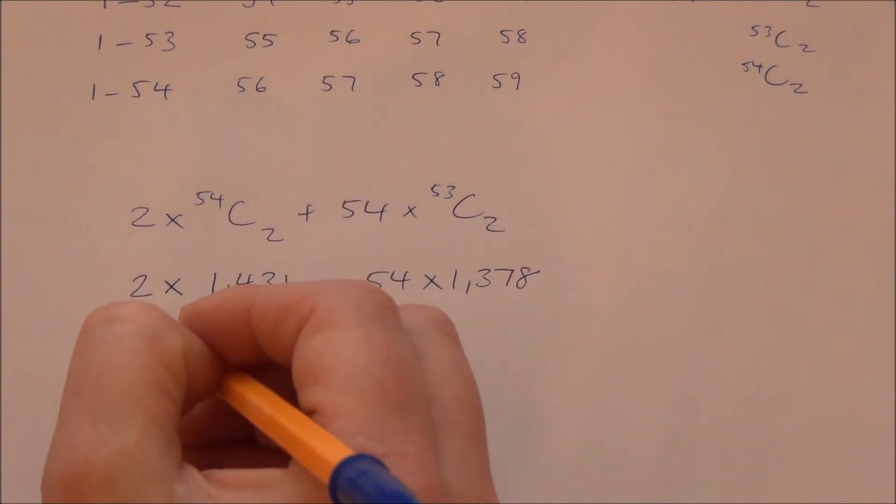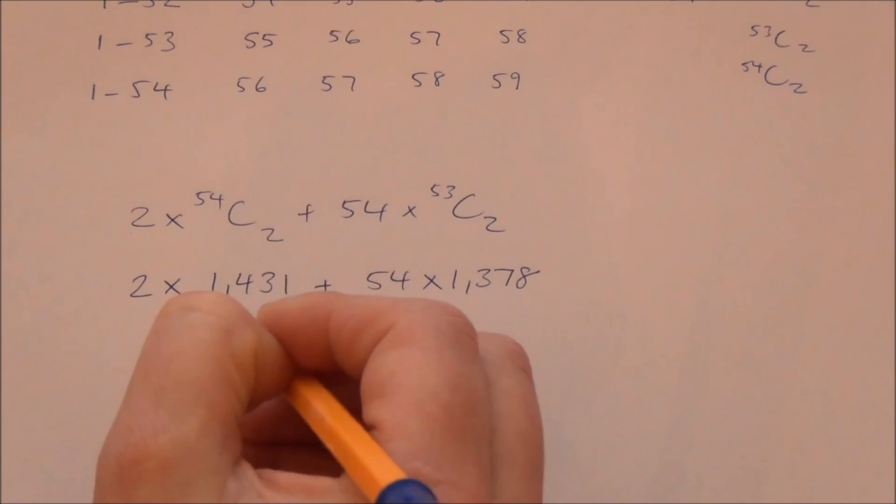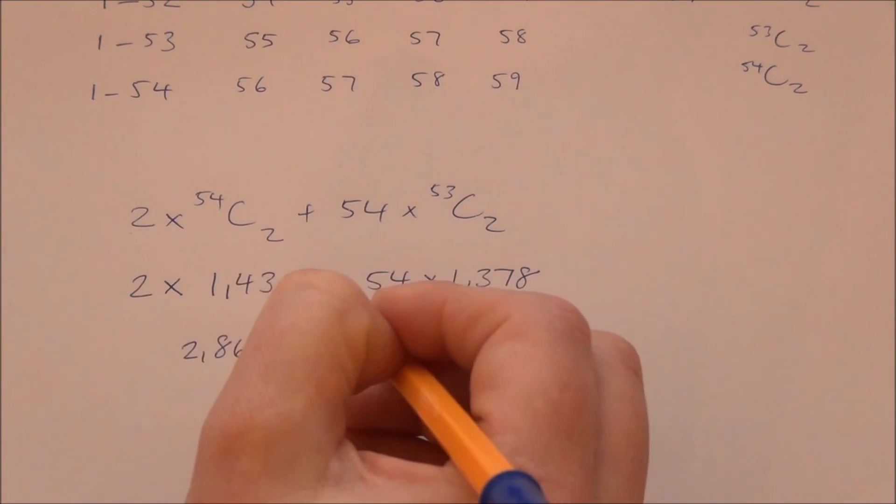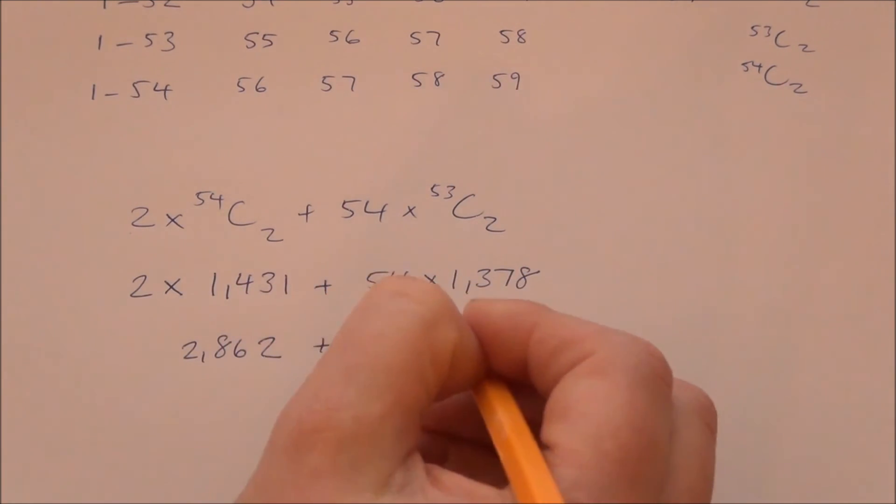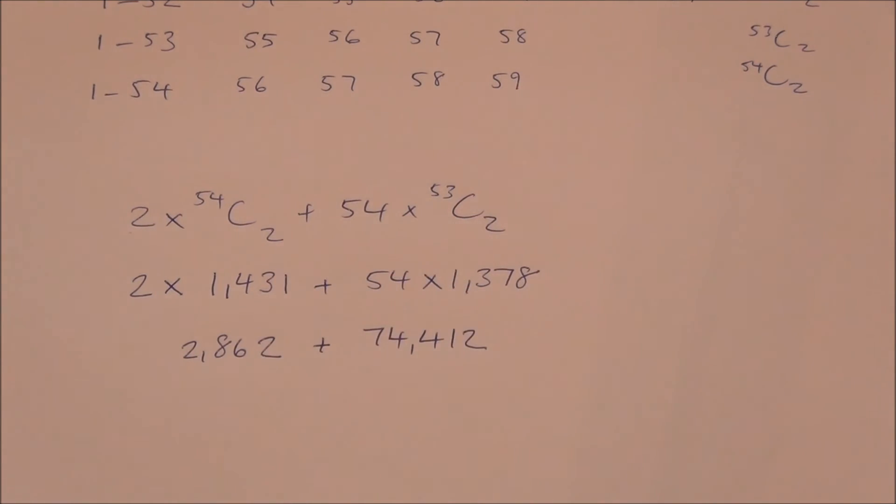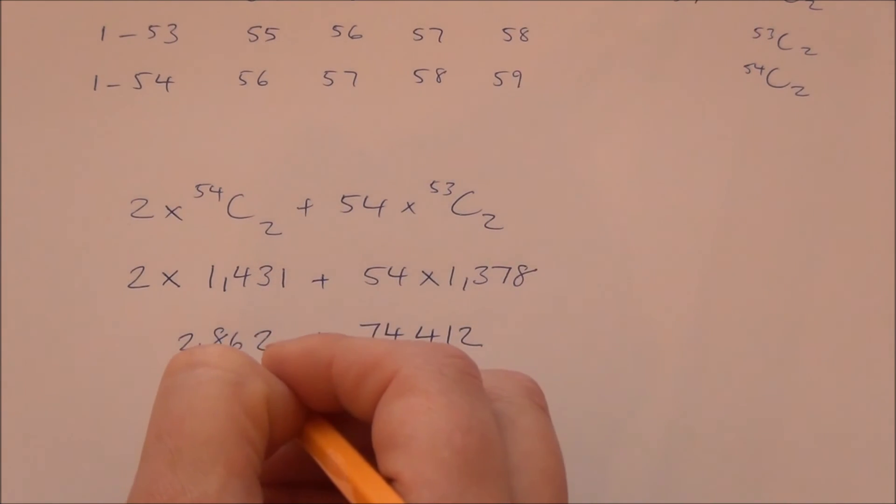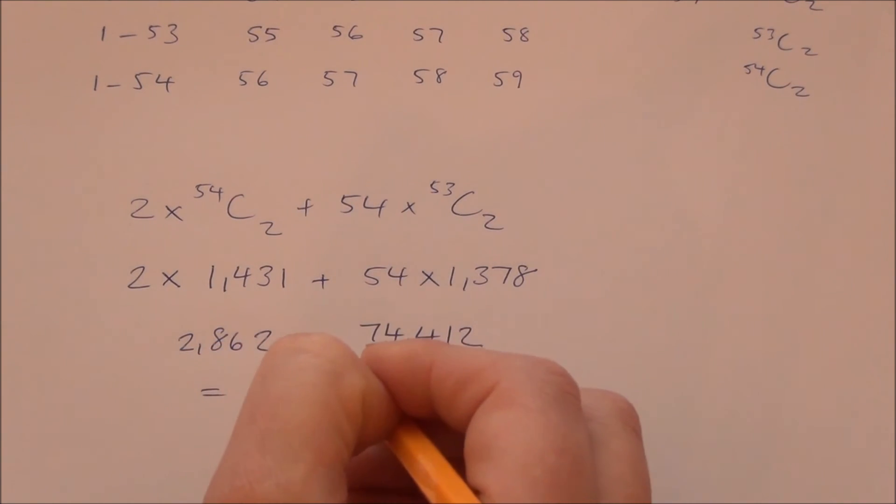that gives us 2 times 1,431 plus 54 times 1,378. So, that gives us 2,862 plus 74,412. And that gives us the total 77,274.